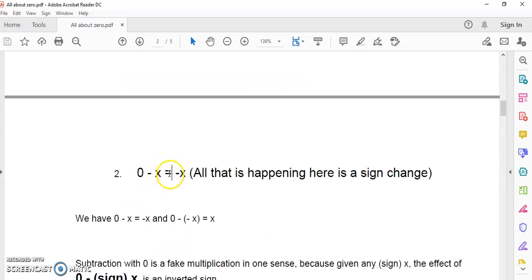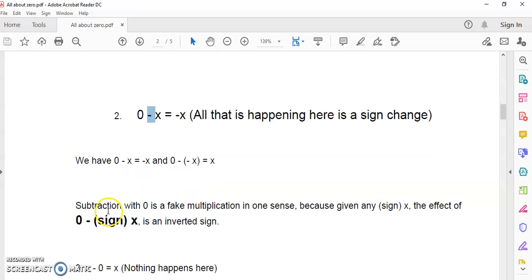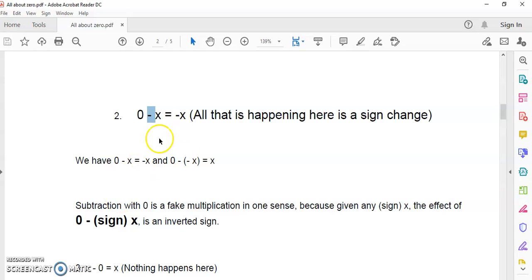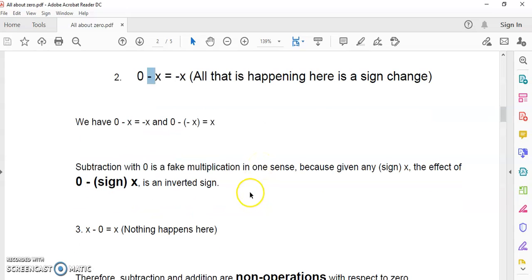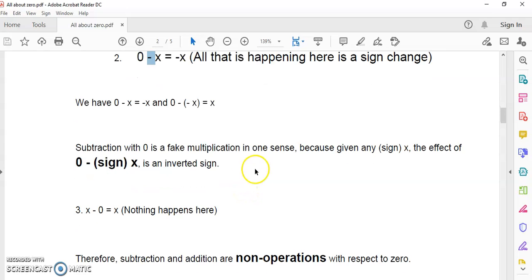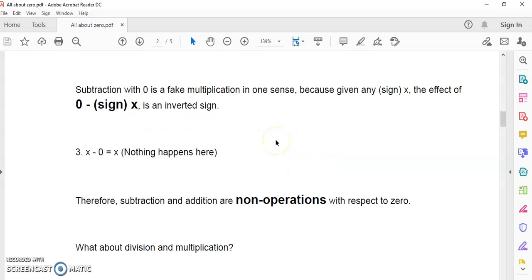The same is true also if you try to subtract a number from zero, because all that's really happening here is that you're changing the sign of that number. So zero doesn't actually take any part in the operation at all. I mean, nothing needs to be done with zero in order to change the sign of a number. All we need to do is consider that the subtraction operator can also be a unary operator, not only a binary, but also a unary.